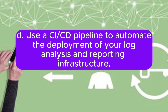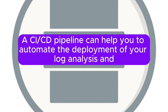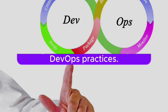Tip D: Use a CI/CD pipeline to automate the deployment of your log analysis and reporting infrastructure. A CI/CD pipeline can help you to automate this deployment, which can save you time and improve your DevOps practices.